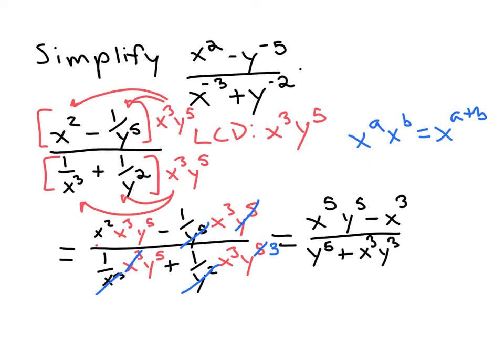One thing we can do now is factor out the common factor of x in the numerator. Always factor out the lower exponent, so x cubed, and you're left with x squared y to the fifth minus one.